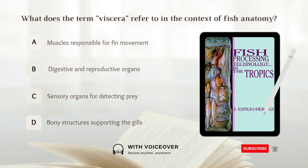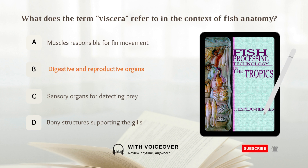What does the term viscera refer to in the context of fish anatomy? A. Muscles responsible for fin movement. B. Digestive and reproductive organs. C. Sensory organs for detecting prey. D. Bony structures supporting the gills. Answer: B. Digestive and reproductive organs. The term viscera refers to the digestive and reproductive organs in the context of fish anatomy. That's all.